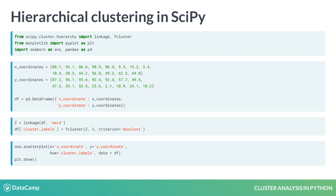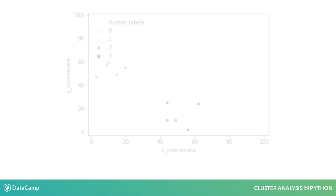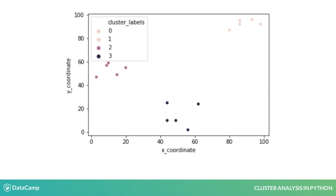Finally, we plot the points using seaborn with the cluster labels as the hue argument to associate clusters with different colors. Here is the result of the seaborn scatter plot showing the three clusters.